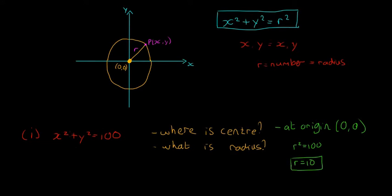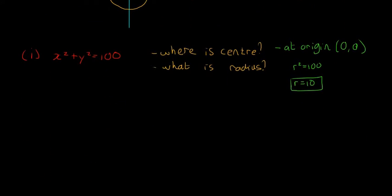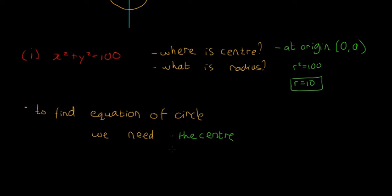So that's kind of what an equation like that means. It stands for a circle that has the center at the origin and a radius of 10. Now we're going to look and try to find the equation of one of these circles given some information. To find the equation of any circle, we need the center of the circle and the radius.